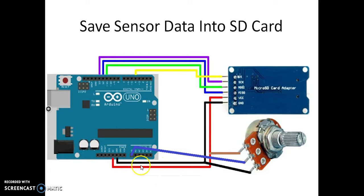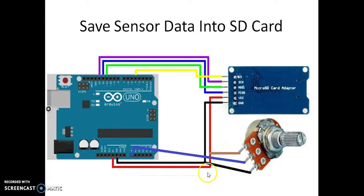Then connect VCC with 5 volts and ground with Arduino ground. For the potentiometer, since it does not have any polarity, one side I connect with Arduino 5 volts, another side with ground, and the middle pin I connect with Arduino analog pin A0. That is the circuit.